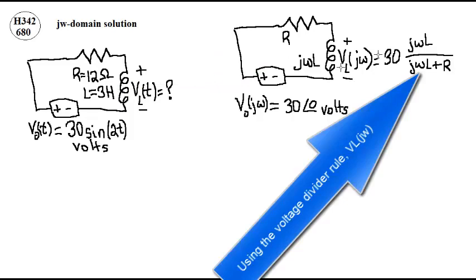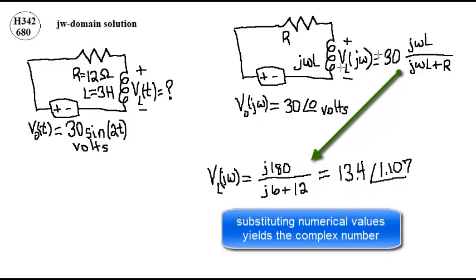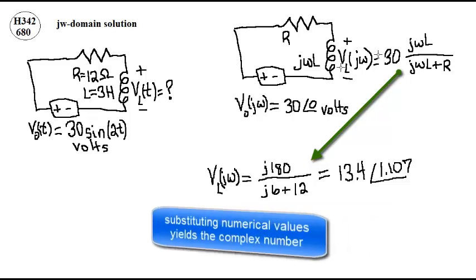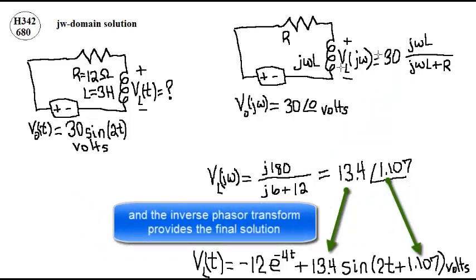Using the voltage divider rule, the voltage across the inductor in the jω domain can be written. Substituting numerical values yields the complex number, and the inverse phasor transform provides the final solution.